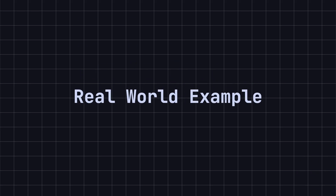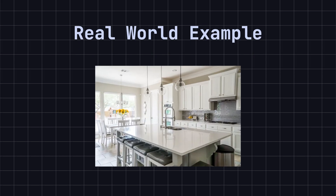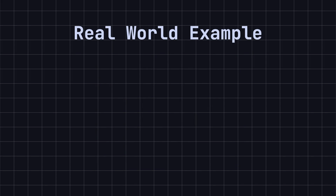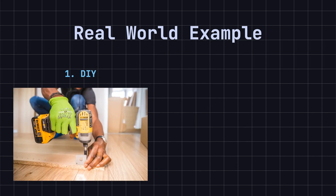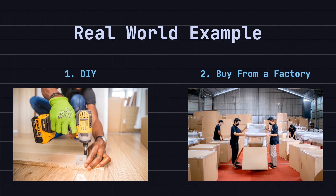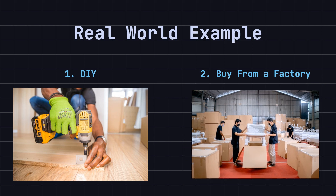Let's start with a real-world example. Imagine you're renovating your home and need some furniture. You have two choices. The first is to put on a carpenter's apron, gather wood, glue, nails, and all the necessary tools, and make the furniture yourself at home. The second option is to contact a furniture factory and have them deliver ready-made furniture to your home. This way, you don't need to learn how to make furniture or deal with the problems that arise during the process. The simple factory pattern is similar to the second option.